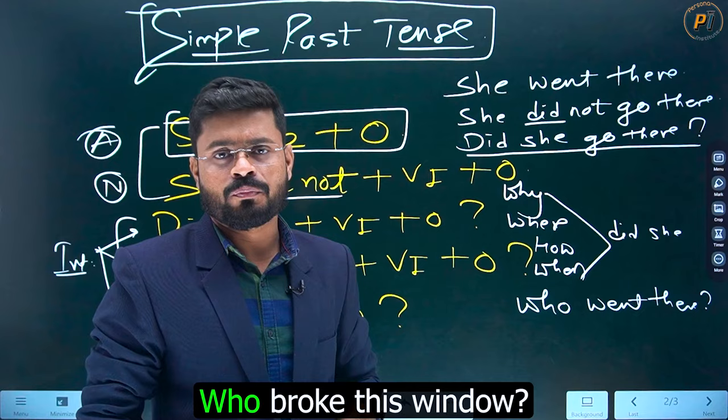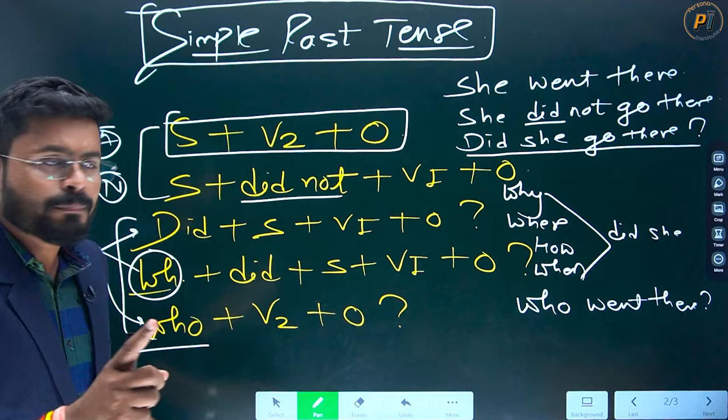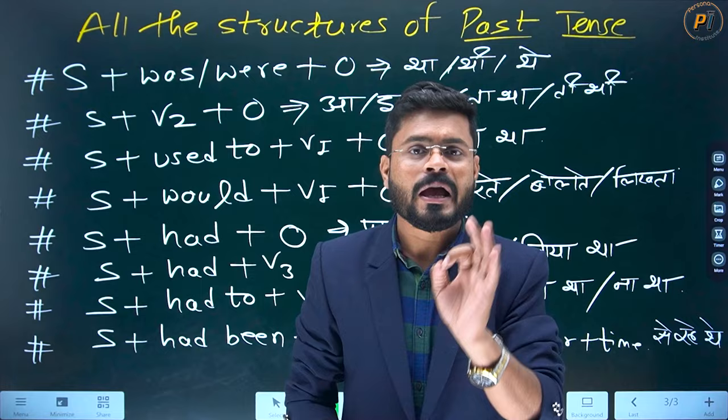So this is the first thing that you must know. Past tense mein jitne bhi structures ban rahe hain, yeh sare ke sare structures ko aap yeh 5 categories mein sabse pahle banana sikho. Maine abhi simple past ko yeh 5 categories mein aapko banana sikhaya hai. Aapko kya karna hai — in sare ke sare sentences ko in 5 categories mein banana ki practice karni hai. Ab baat karte hain inke beech mein kya differences hote hain.